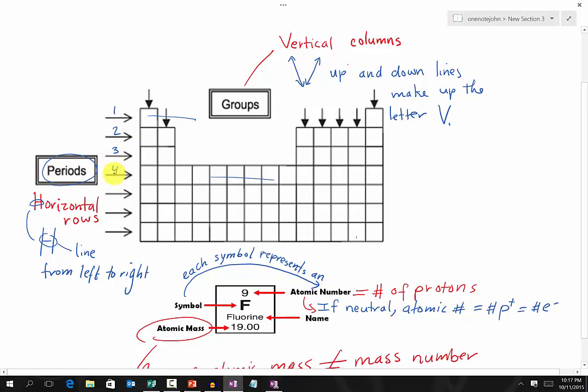Now a quick way to remember that Periods are horizontal going across like this: If you look at the H, within the H, there is a line going from left to right. It is horizontal going left to right. So that's how you know the Periods are horizontal rows going across the Periodic Table.